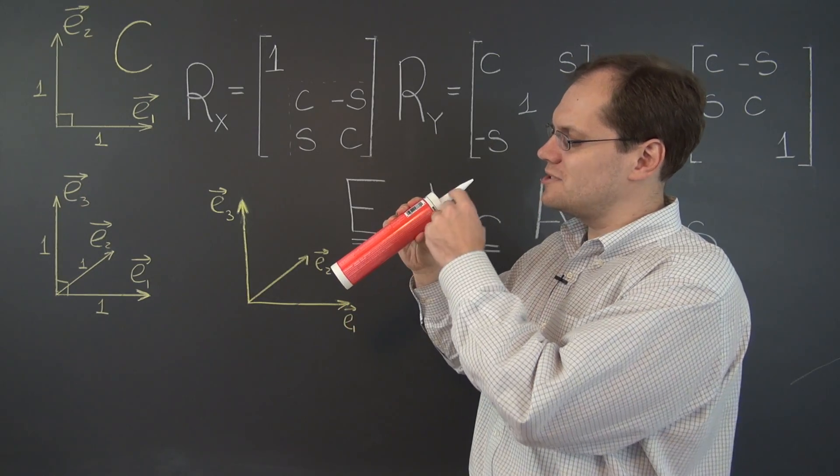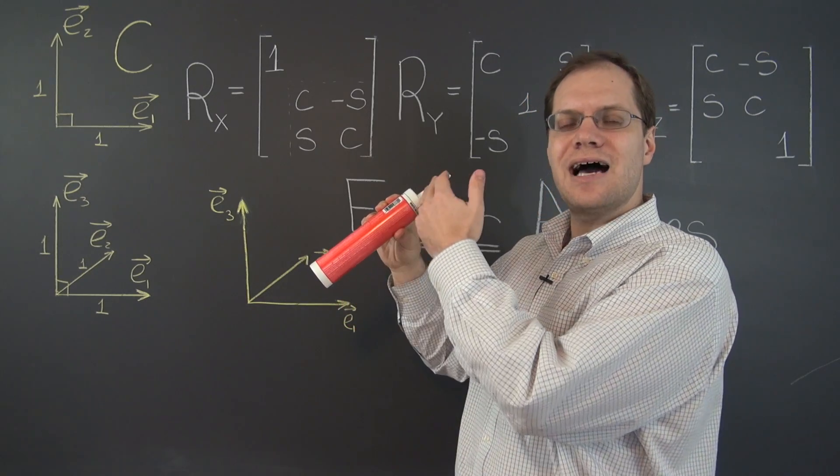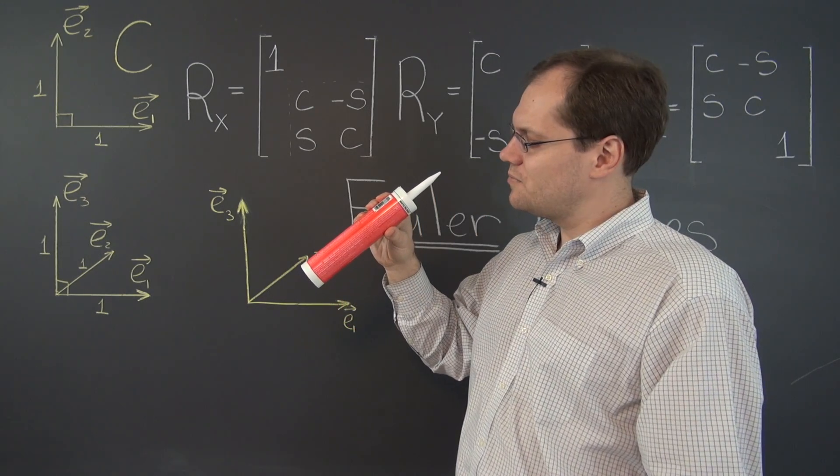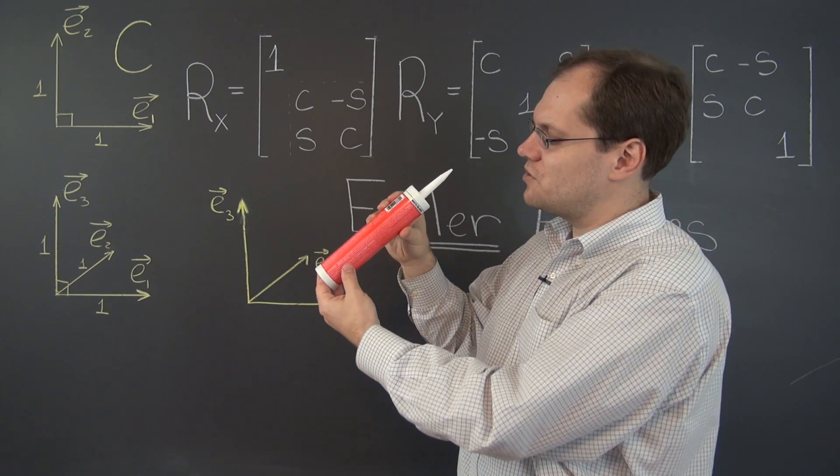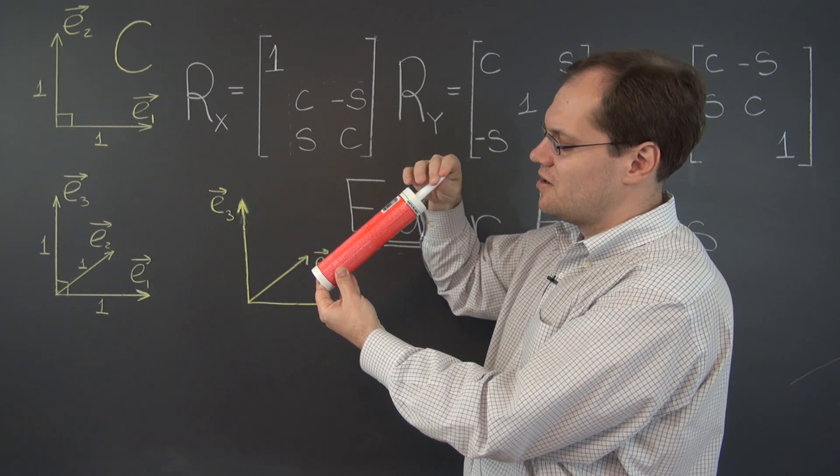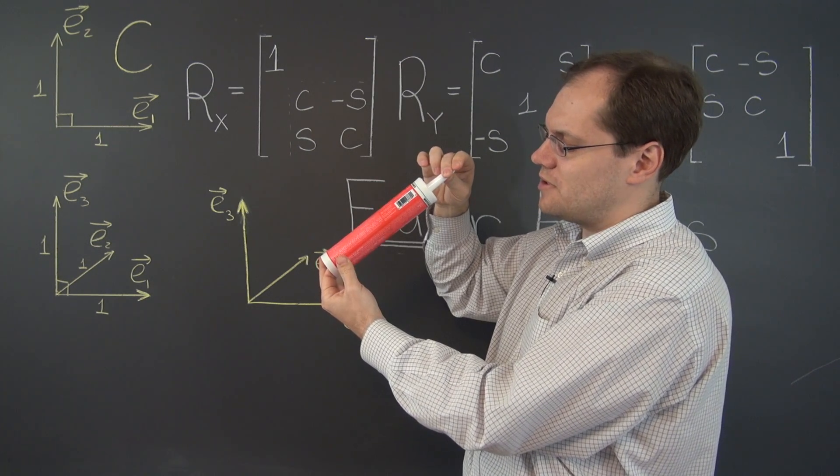So it still points in the same theta-phi direction as before. This is the desired direction. But as you notice, it's an entirely different configuration. The twist is different because previously this side of the can faced towards you and now it's this one.